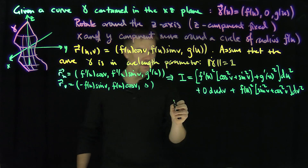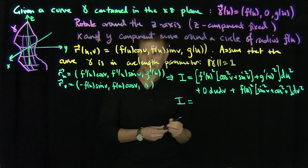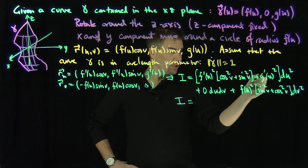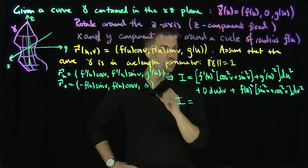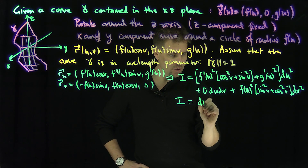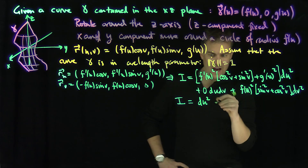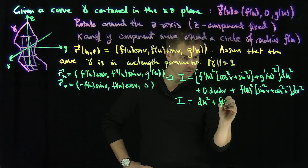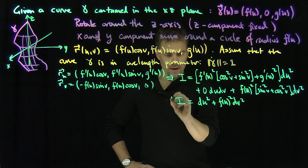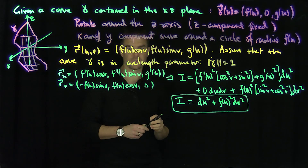So what does our first fundamental form simplify to? Since we're in arc length parametrization, f'² + g'² = 1, so the first fundamental form simplifies to du² + f(u)² dv². This type of fundamental form occurs all the time, so it's a very important class of first fundamental forms.